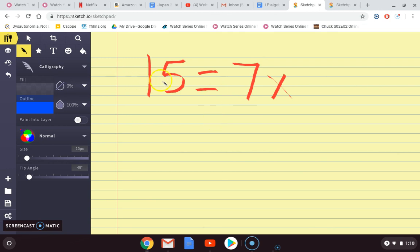Here we have 15 equals 7x. We have a number in front of the letter. In your vocab, you saw that this number is called a coefficient. It is the number in front of x, and they're always being multiplied.